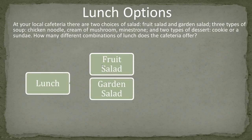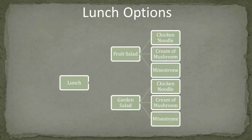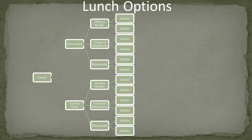We start with lunch, and our first choice is fruit salad or garden salad. From lunch we have the option of fruit salad and garden salad. From each of these we're going to have the three types of soup. The fruit salad gets all three options: chicken noodle, cream of mushroom, or minestrone. The garden salad also has those three soup options. Then lastly you have the choice of dessert, so each of these will have two choices — the chicken noodle soup and fruit salad combination has an option of cookie or sundae, and so on.